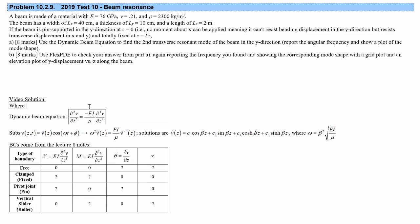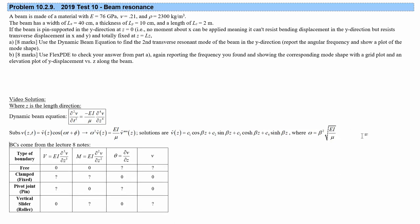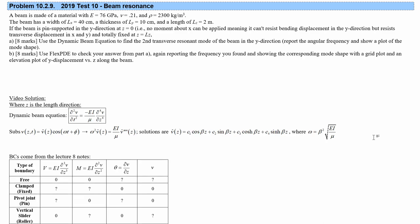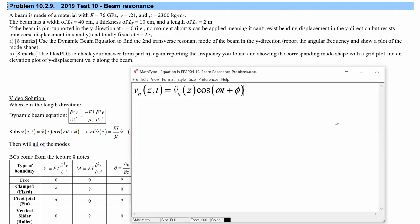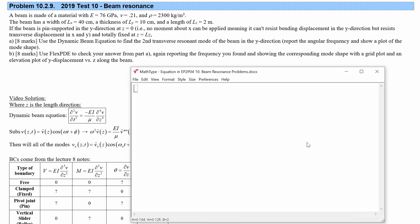Where Z is the length direction. When we solve this ODE, we find an infinite number of different betas that work. Each beta corresponds to one particular frequency omega_n and one particular mode shape V hat_n. We find all of the modes — V_n at (z,t) equals V hat_n at z corresponding to frequency omega_n — and form the general solution to the dynamic beam equation as the sum over all V_n at z and t.